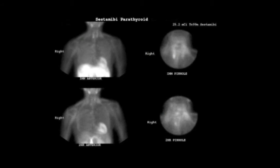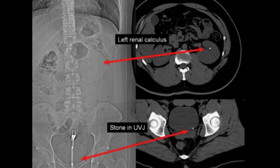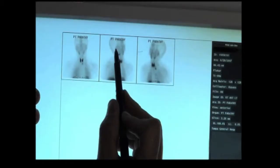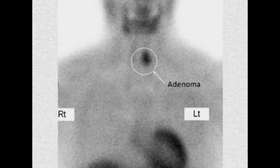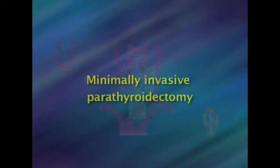The most commonly used imaging tests are sestamibi and ultrasound scans. In the sestamibi scan, the patient receives an injection of a small amount of radioactive dye that is absorbed by overactive parathyroid glands. The overactive glands can then be viewed using a special camera. Surgeons use two main strategies to remove the overactive gland or glands: minimally invasive parathyroidectomy and standard neck exploration.